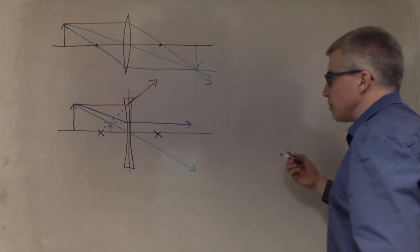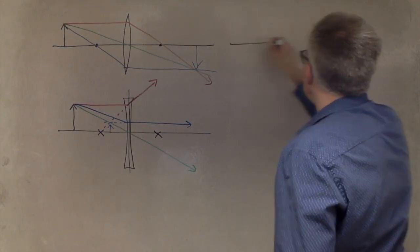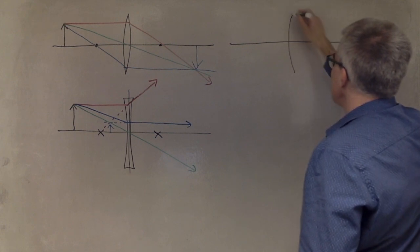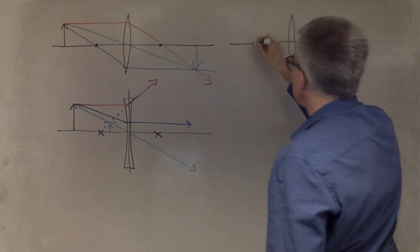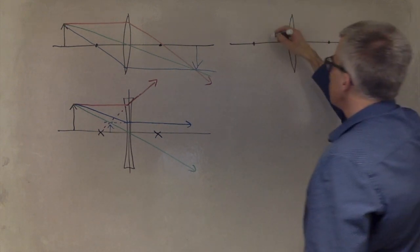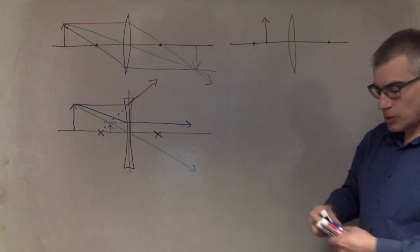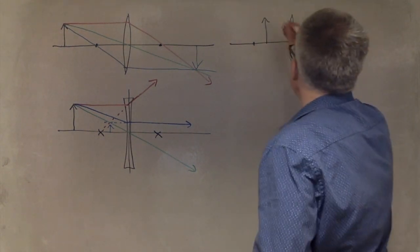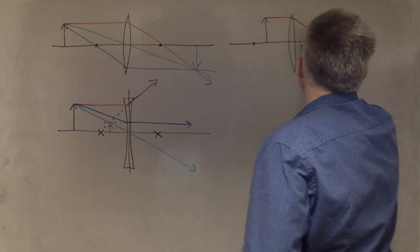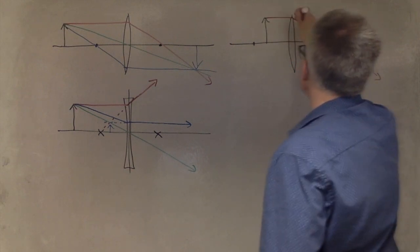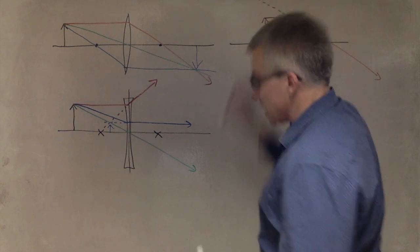Next up, a convex lens, but this time we're closer in than the focal point. What happens now? Now, parallel beam bends through focal point, but this is too close to converge, so this is going to back up.